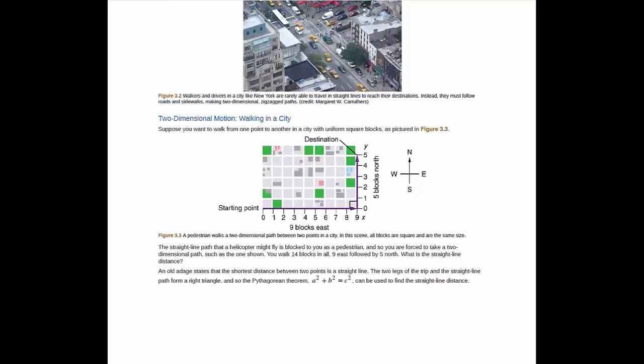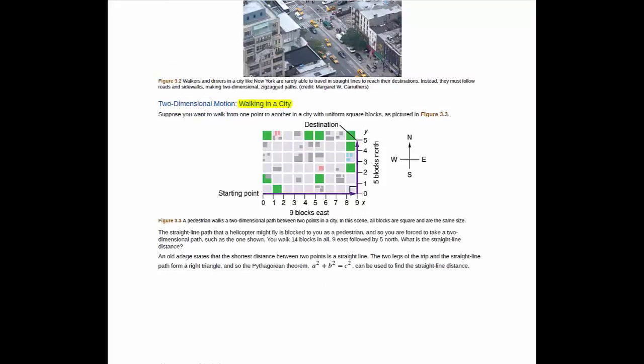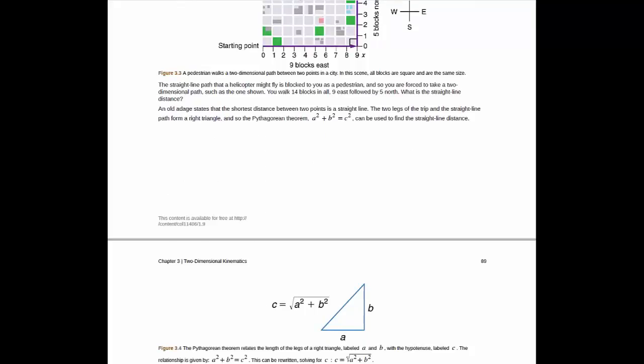Here you have a nice example of someone walking in a city of grid streets, and how to use the Pythagorean theorem to figure out the total distance traveled by a person. You'll be using a lot of the Pythagorean theorem in our study of two-dimensional kinematics and throughout this course.